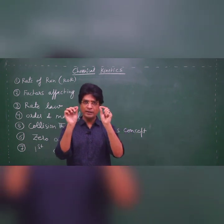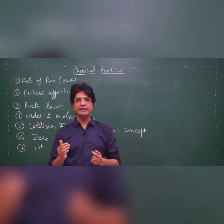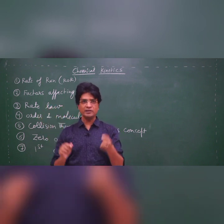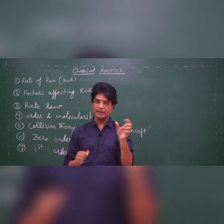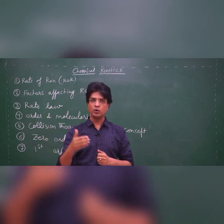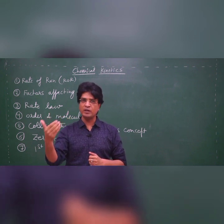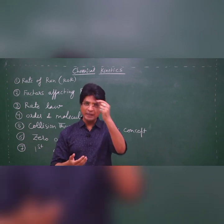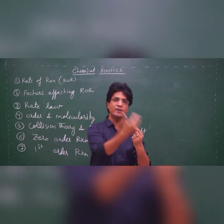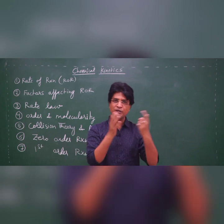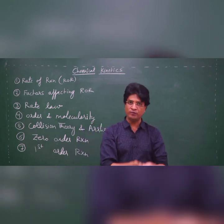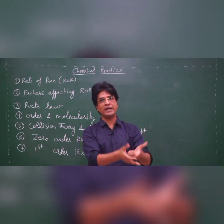Physical chemistry can be broadly divided into two sub-headings: thermodynamics and chemical kinetics. Thermodynamics tells you how far a reaction will go, or whether a reaction will occur or not. While chemical kinetics tells you, if a reaction will occur, how fast it will occur. In short, chemical kinetics is all about finding the speed of reaction, or you can say, finding the rate of reaction.